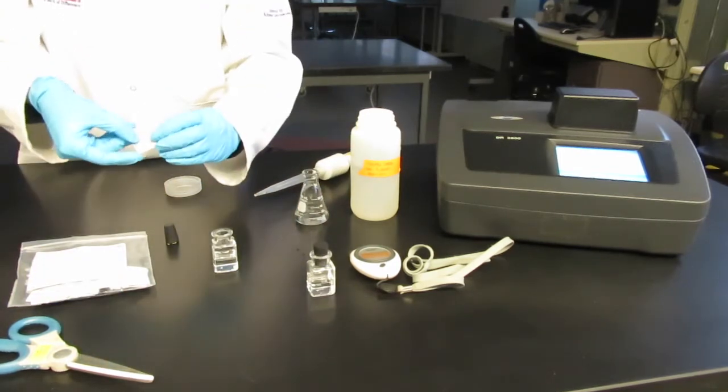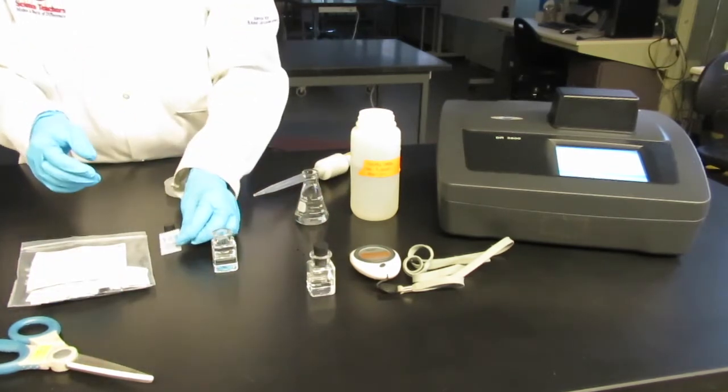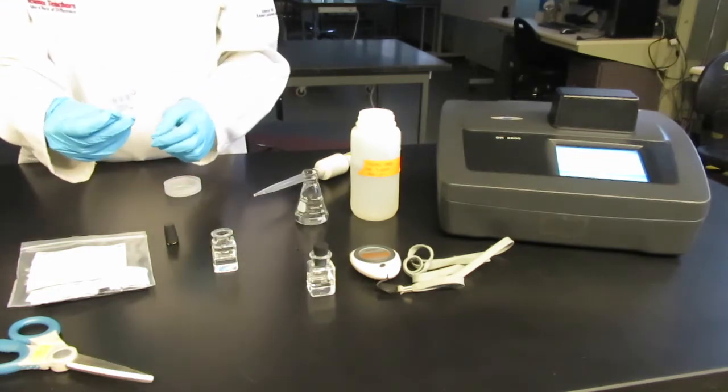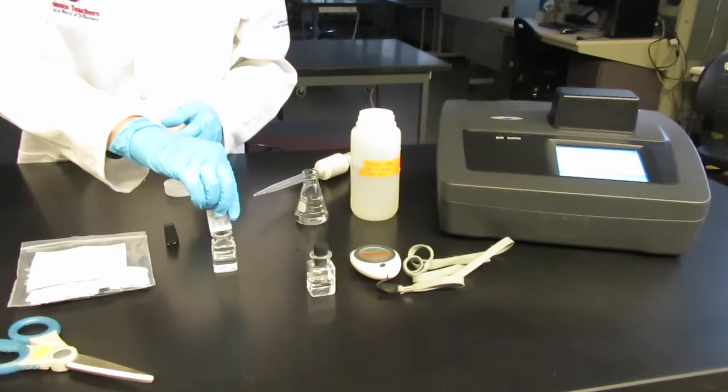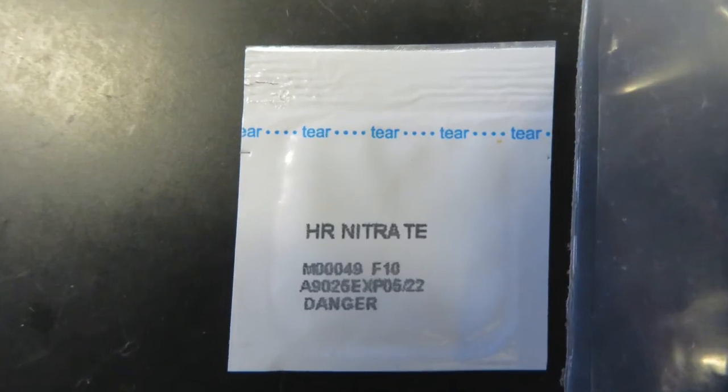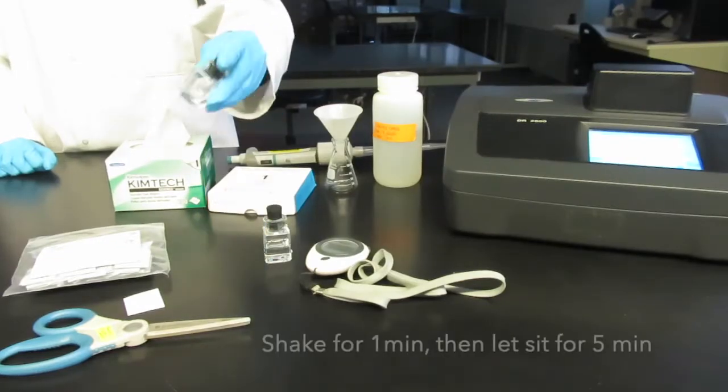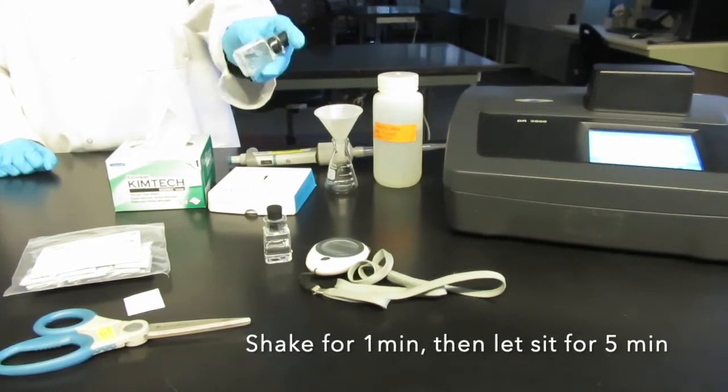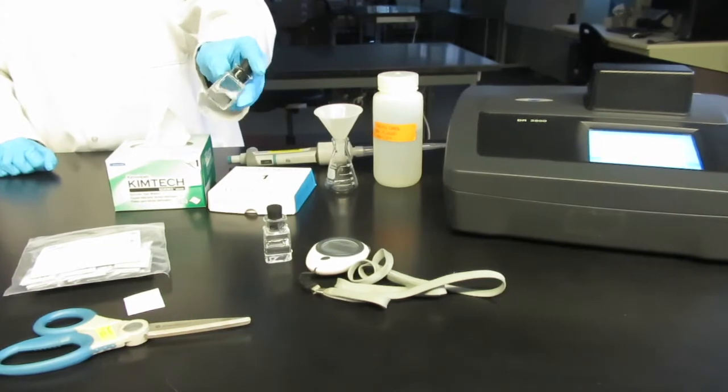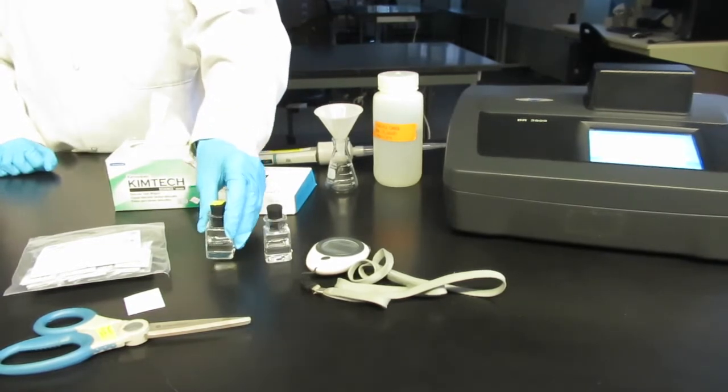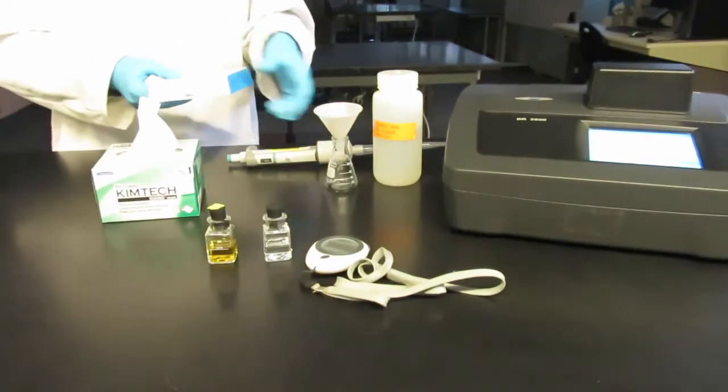Cut and add your nitrate powder pillow into the one cuvette. This will be your sample cuvette. Put the stopper on sample cuvette and shake vigorously for one minute. Let the sample sit for five minutes. In the meantime, declutter your work area in order to operate safely and avoid spills.